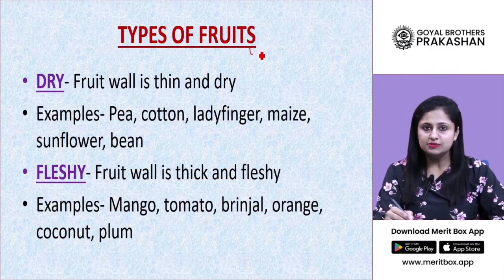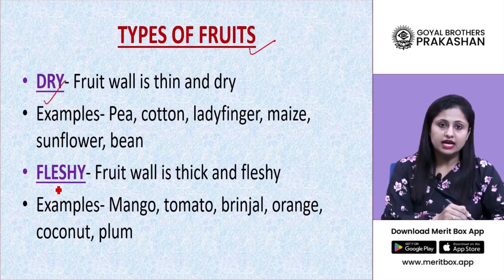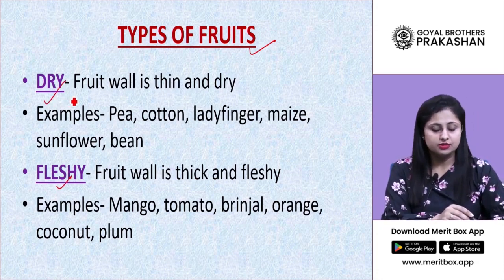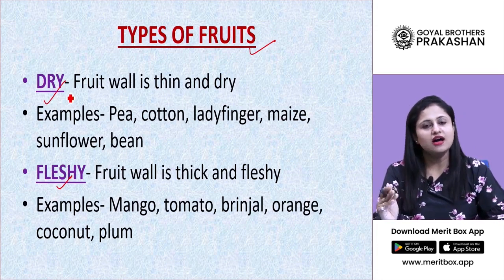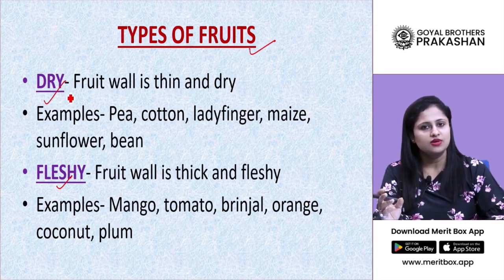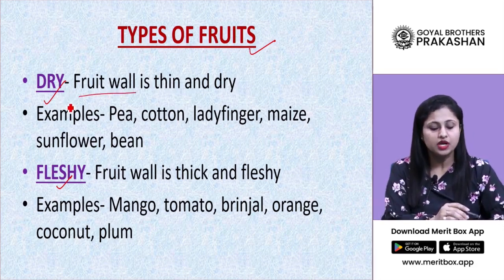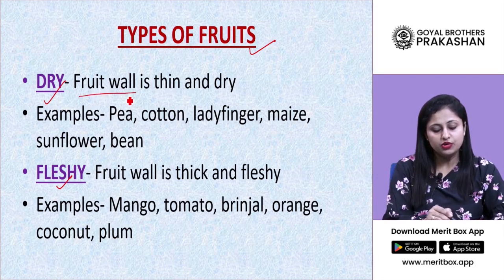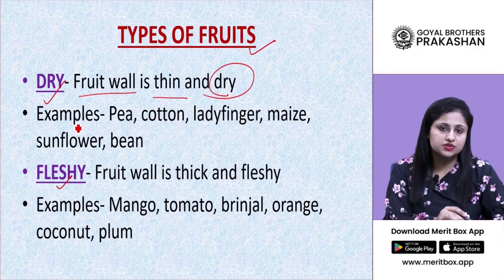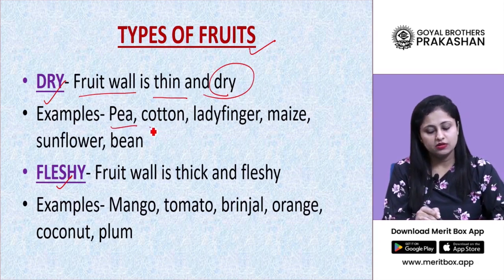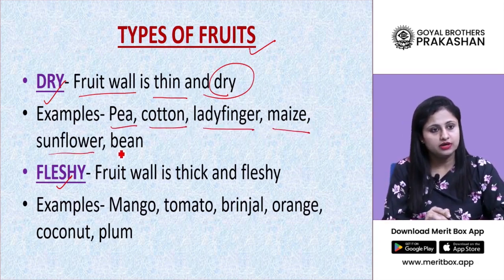Fruits are generally of two types: dry and fleshy. Dry fruits are those in which the fruit wall is thin and dry — not to be confused with commercially sold dry fruits like almonds or cashews. Examples of dry fruits are pea, cotton, ladyfinger, maize, sunflower, and bean.